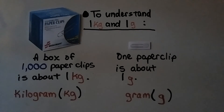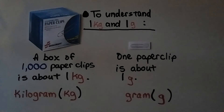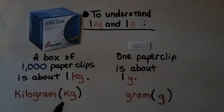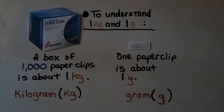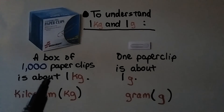To understand the difference between one kilogram and one gram: a box of 1,000 paper clips is about one kilogram (kg), and one paper clip is about one gram (g). This shows how much greater one kilogram is compared to one gram.